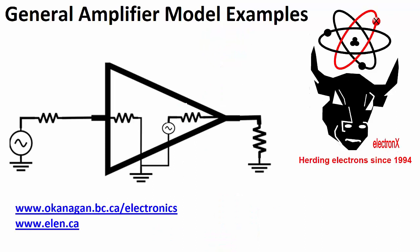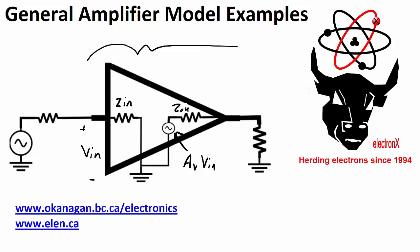Welcome to the electronics channel. In this video I'm going to do a couple of examples with a general amplifier model. This right here is a general amplifier model and it consists of an amplifier that has an input impedance, a voltage gain AV that gets multiplied by the input voltage — where the input voltage is taken across the Z-in — and it has an output impedance. This model can then have an input source applied that itself will have some output impedance, which I'll call RS.